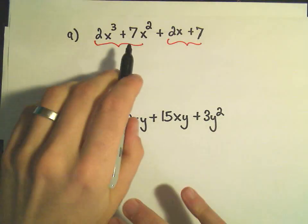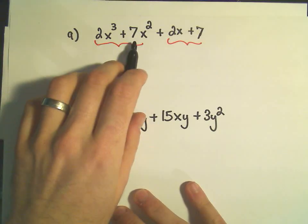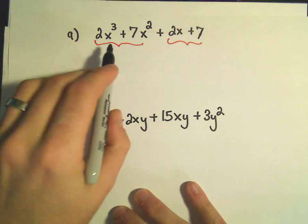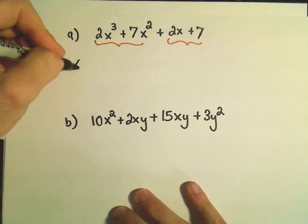So for the first two terms, I think, what's the greatest common factor? Well, here I have a 2 and a 7, so there's not really a good number to factor out. We've got x cubed and x squared. We could factor out an x squared there.